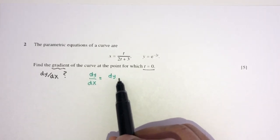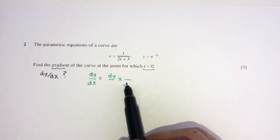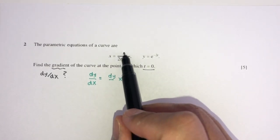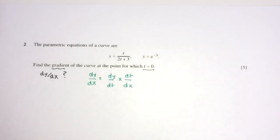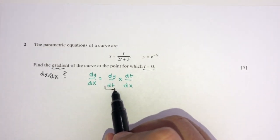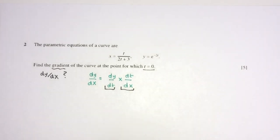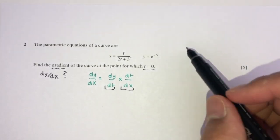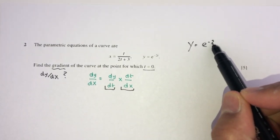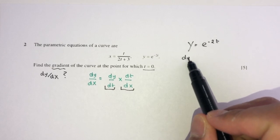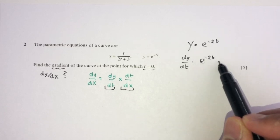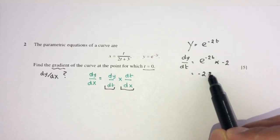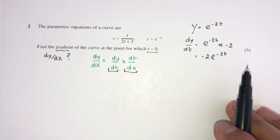So we need to find dy/dt and dx/dt separately. For y = e^(−2t), differentiating gives dy/dt = −2e^(−2t).